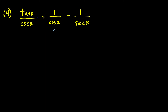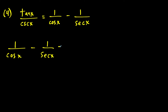For question four, we're trying to show this identity is true. The right-hand side has the difference of two fractions while the left-hand side has just one fraction. So I'm going to start with the right-hand side and show it equals the left-hand side. Sometimes there's not just one nice approach — you may try something and hit a dead end and have to go back and try something else.